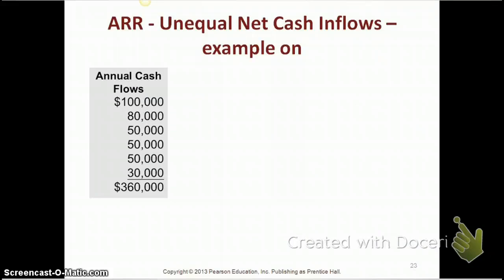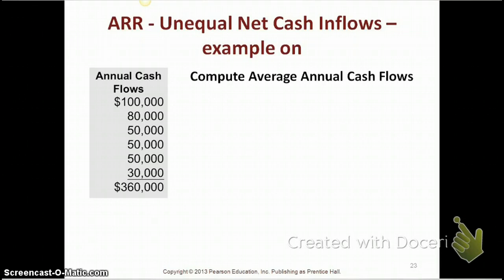Whenever you're calculating your accounting rate of return, the first step is to calculate your average income. To do this, we first add up the annual cash flows given to us. When you add up all the annual cash flows, we come up with $360,000. We then get an average cash flow — it's over six years, so average cash flow is $360,000 divided by six, giving us a $60,000 average cash flow.